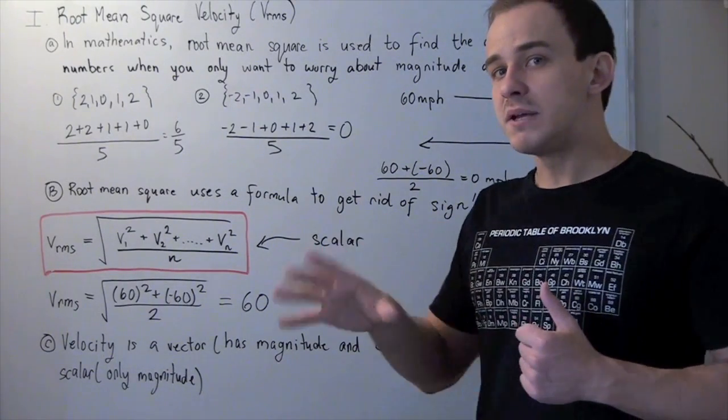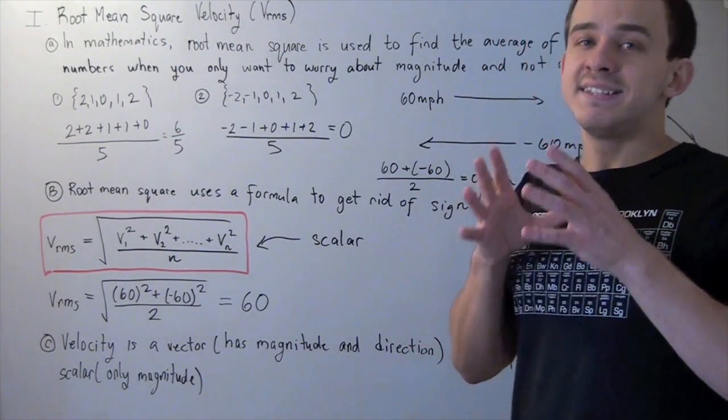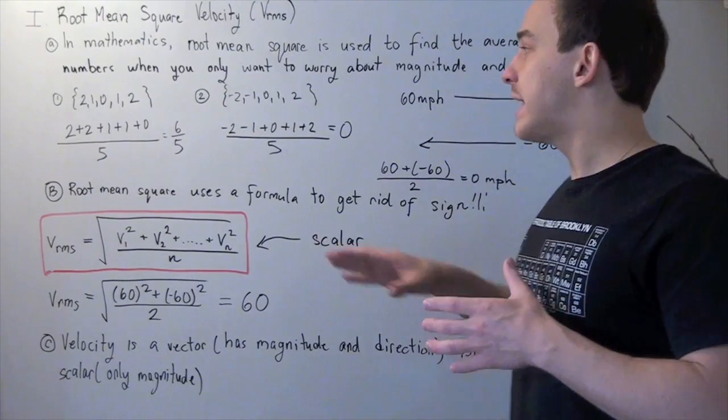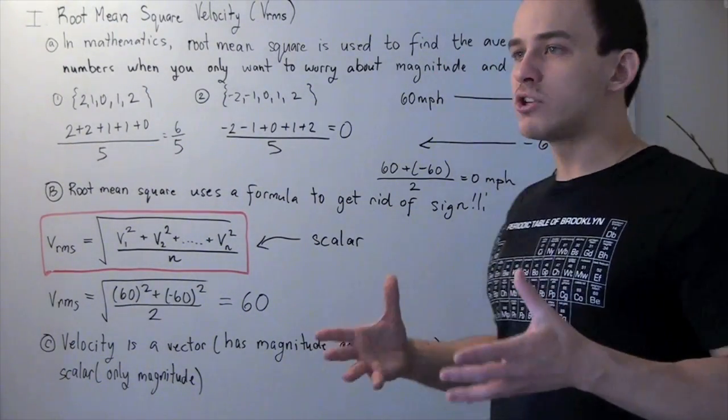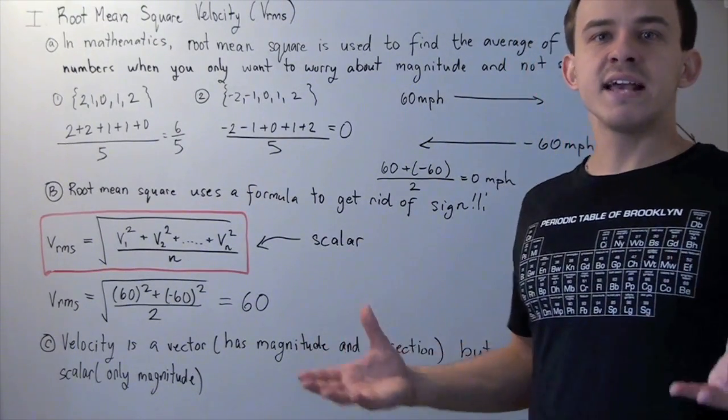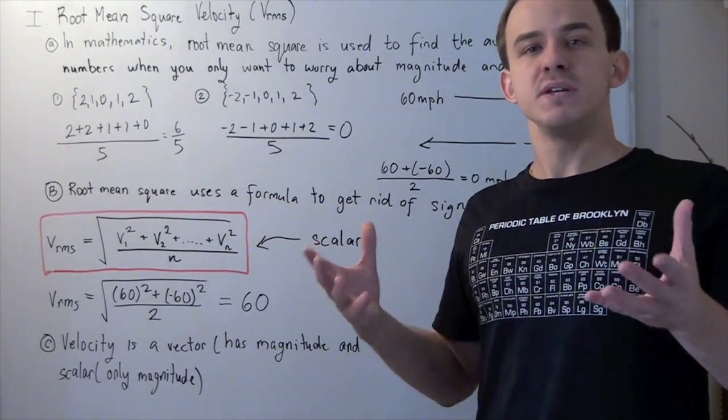So sometimes, from a mathematics point of view, taking the average in the same way that you did here doesn't make sense. Because in the real world, if you have two cars traveling at some speed, and you take their average, how can their average be 0?